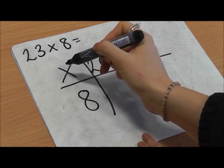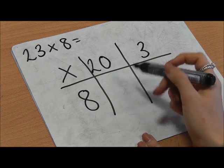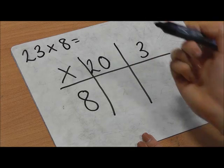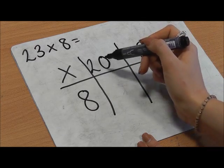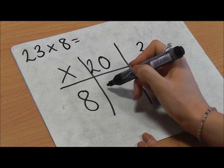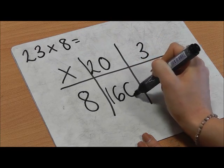20 times 8. I know that 2 times 8 is 16, so I'm going to make it 10 times bigger. 20 times 8 is 160.